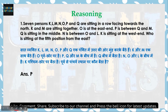First question: 7 persons are sitting in a row facing towards the north. K and M are sitting together. O is at the east end. P is between Q and M. Q is sitting in the middle. N is between O and L. K is sitting at the west end. O is sitting at the fifth position from the east.